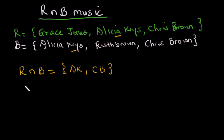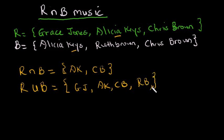So now R union B will now be all the musicians who sing either rhythm or blues, or they sing both R and B. So that will be the list of all musicians in our set. So we have Grace Jones, we have Alicia Keys, Chris Brown, Alicia Keys again so we don't have to write it again, we have Ruth Brown, and Chris Brown has already been written, so we close our set.